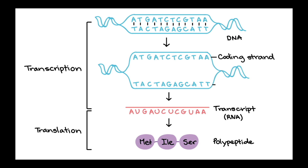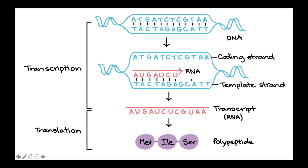Since there is a concept of complementary base pairing in DNA and RNA — A will always pair with T, and C will always pair with G — the strand opposite the coding strand will be used as a template to produce the mRNA during transcription. By using this strand as a template, you can see the mRNA carries the same code as the coding strand. To recap, the coding strand is the same as the mRNA, and to produce the mRNA, the strand opposite the coding strand will be used as the template during transcription.